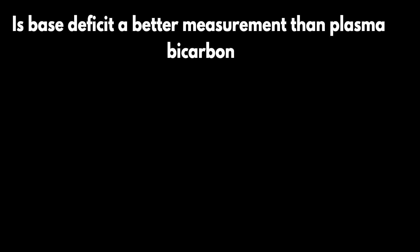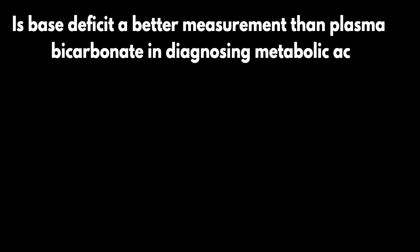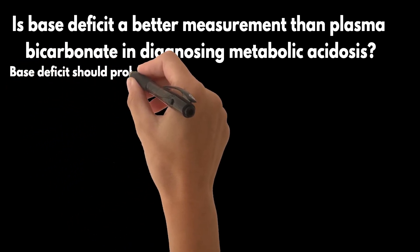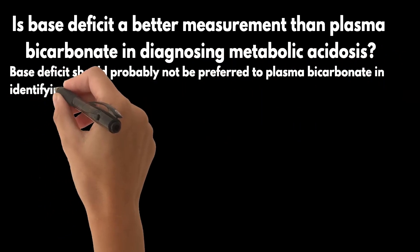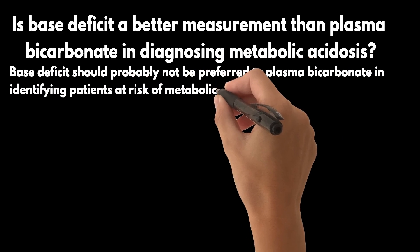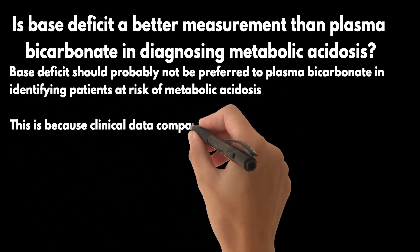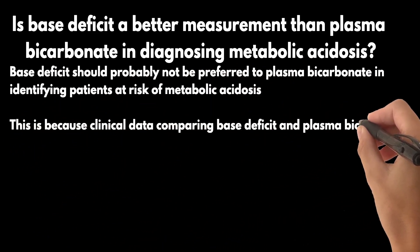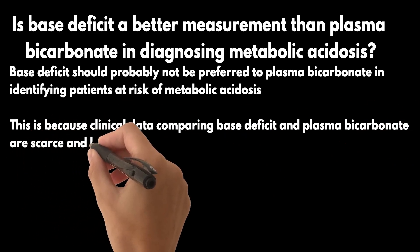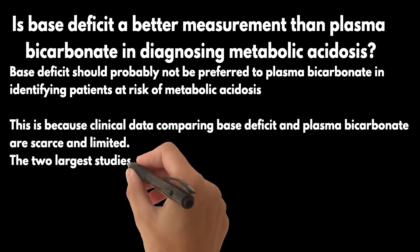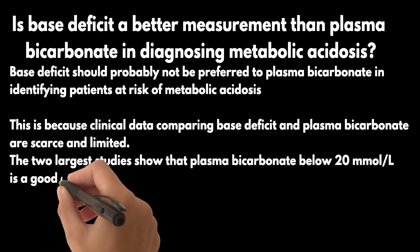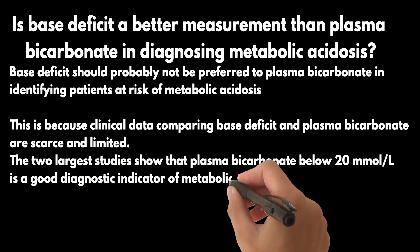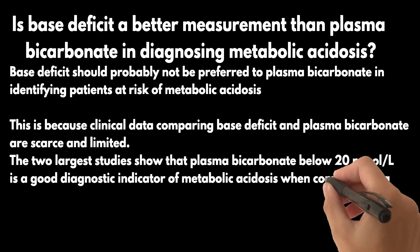Is base deficit a better measurement than plasma bicarbonate in diagnosing metabolic acidosis? Base deficit should probably not be preferred to plasma bicarbonate in identifying patients at risk of metabolic acidosis. Clinical data comparing the two are scarce and limited. The two largest studies show that plasma bicarbonate below 20 mmol/L is a good diagnostic indicator of metabolic acidosis, compared to a base excess of minus 5 mmol/L.